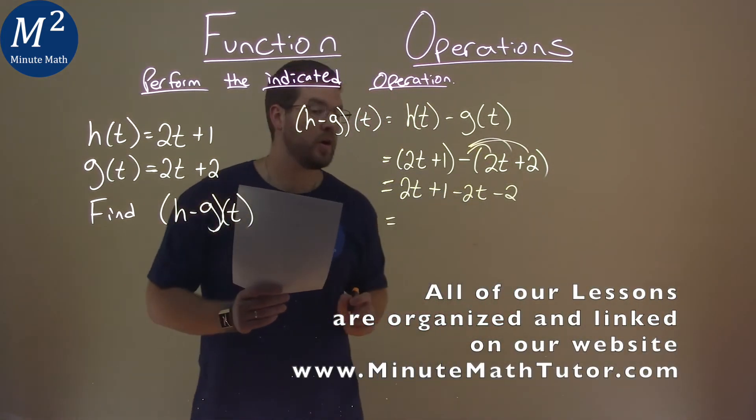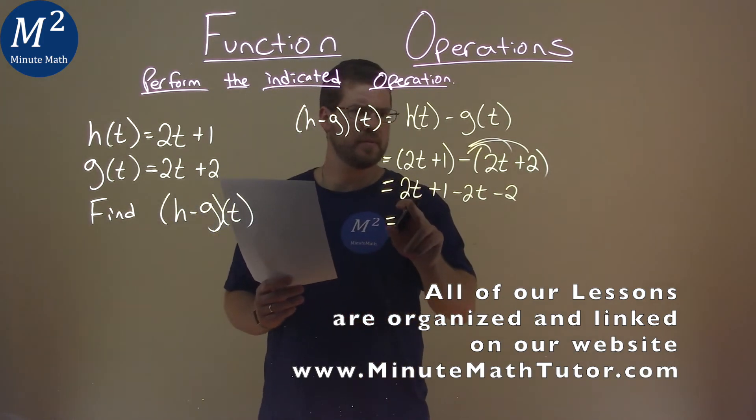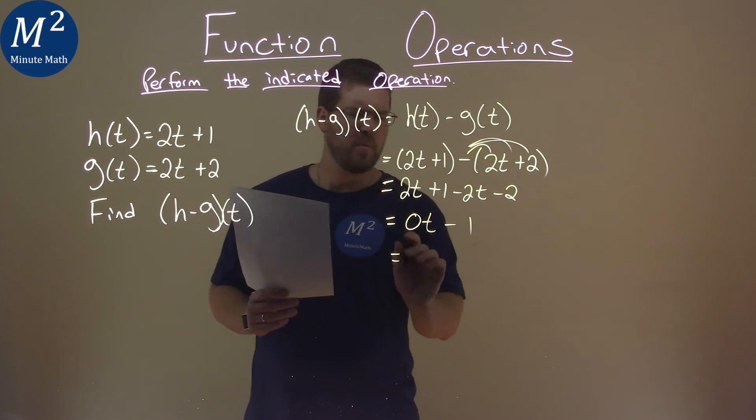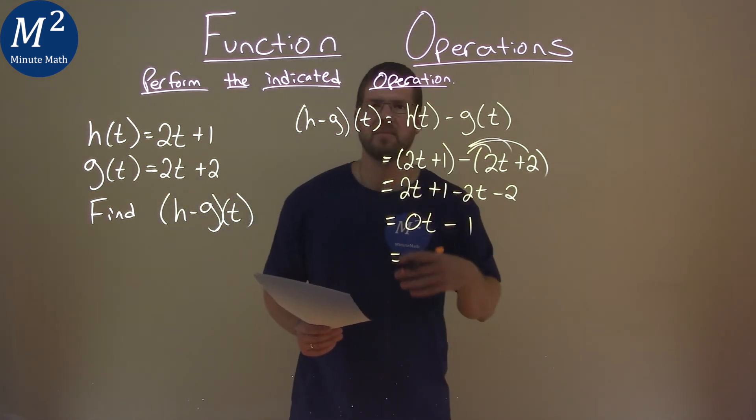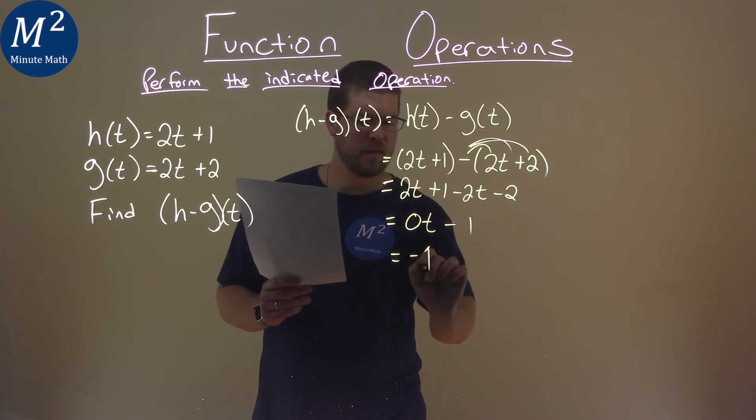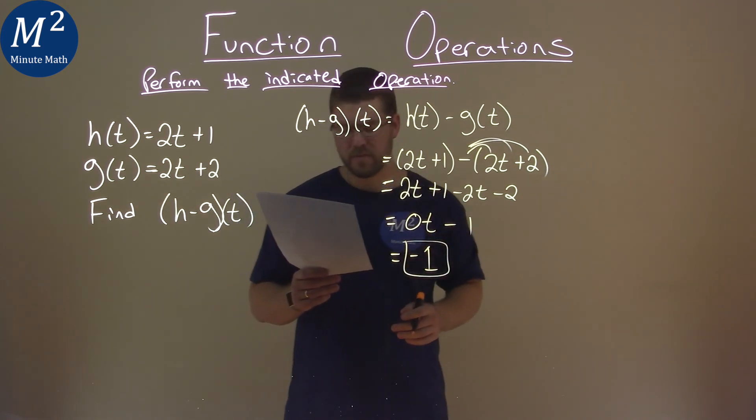So now, we have to combine our like terms. 2t minus 2t is 0t. 1 minus 2 is negative 1. Well, do we need to write 0 times t? No. So we just bring down the negative 1, and our final answer here is just negative 1.